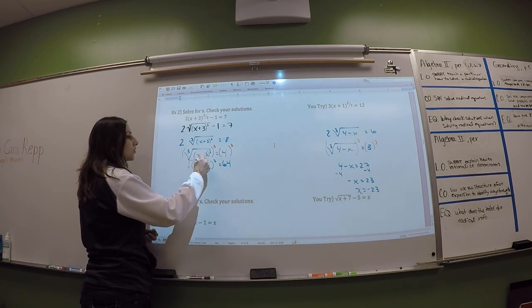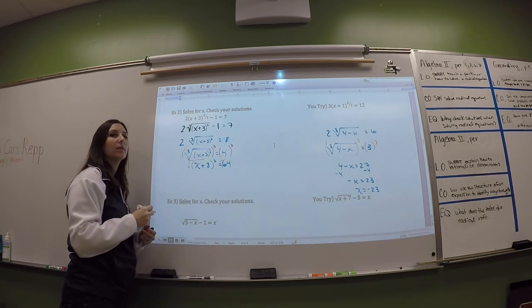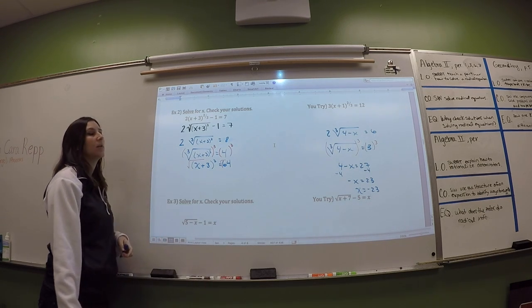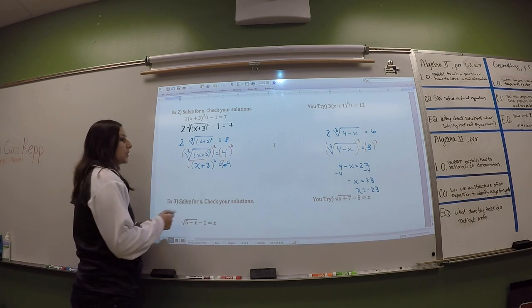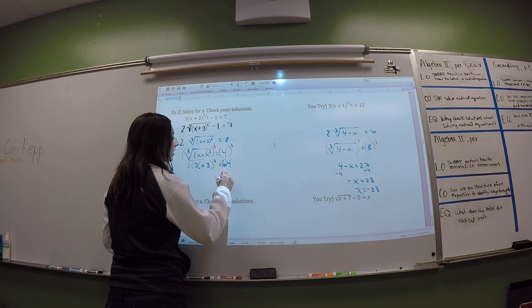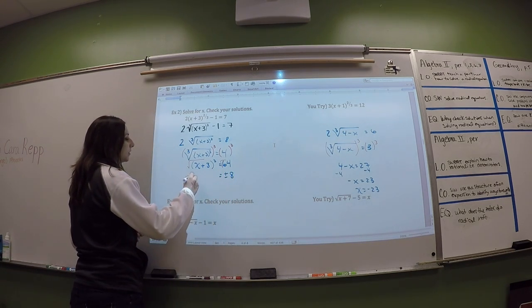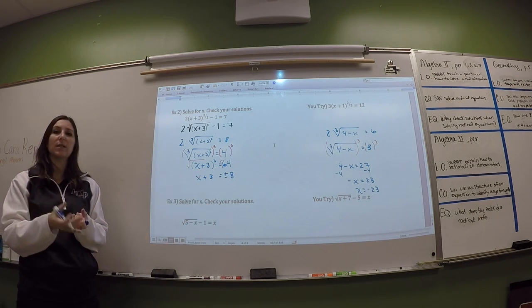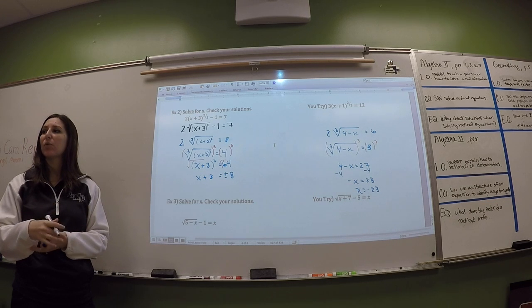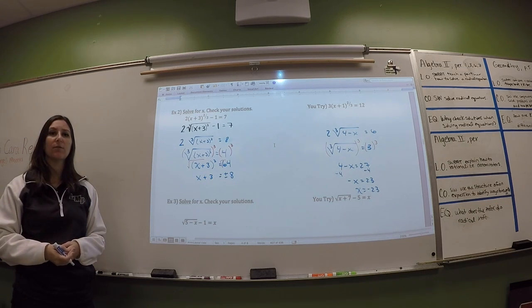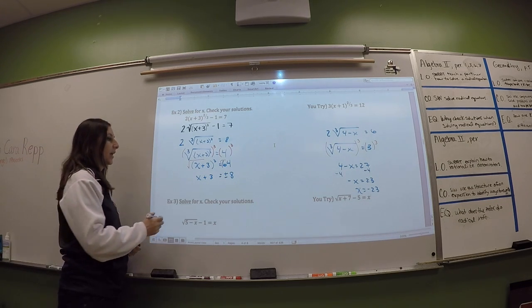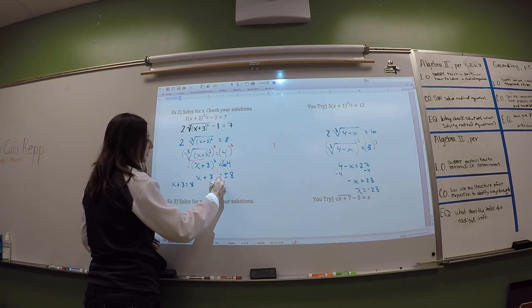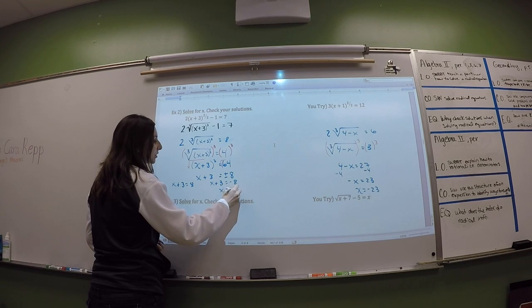So instead what we're going to do is we're going to square root both sides using our square root property from chapter 4. Remember when you square root both sides, we usually do plus or minus the number, and that's because x plus 3 squared is 64. We don't know if x plus 3 is 8 or negative 8, because both 8 and negative 8 are 64 when they're squared. And then we have x plus 3 can be 8, x plus 3 can be negative 8, so I have two options.